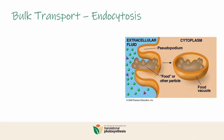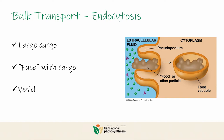Endocytosis is the process of taking large things in, and to do so the cell will kind of fuse with its cargo. The cell membrane wraps around a large molecule to internalize or engulf it. As a result, it will create what is called a vesicle or a vacuole.